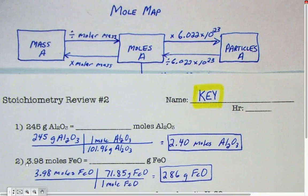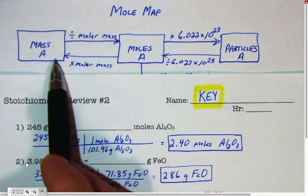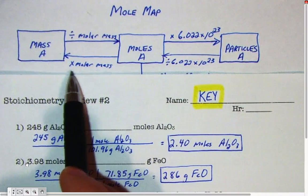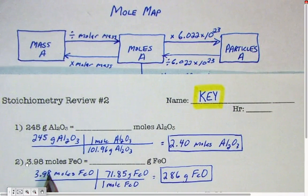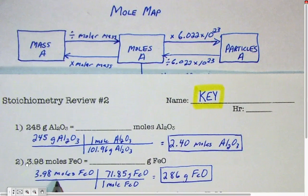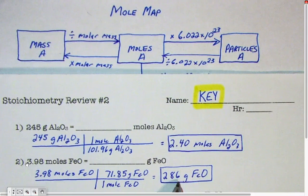Let's say you want to go backwards and go from moles to mass. According to the mole map, you're supposed to multiply by the molar mass, and if you look at the stoichiometry review number 2, right here you multiply the moles by the molar mass to find the mass of that chemical that you have.